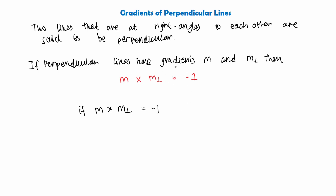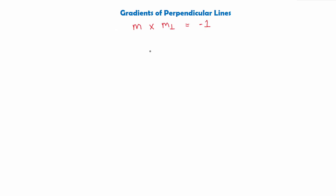Using this formula we can test whether lines are perpendicular by multiplying both their gradients and seeing if we get negative one. We can also work out the gradient of a perpendicular line by rearranging this formula. One quick rule: if we know the gradient m of one line, we can find the gradient of the perpendicular line by inverting the gradient — flipping the fraction and changing the sign.